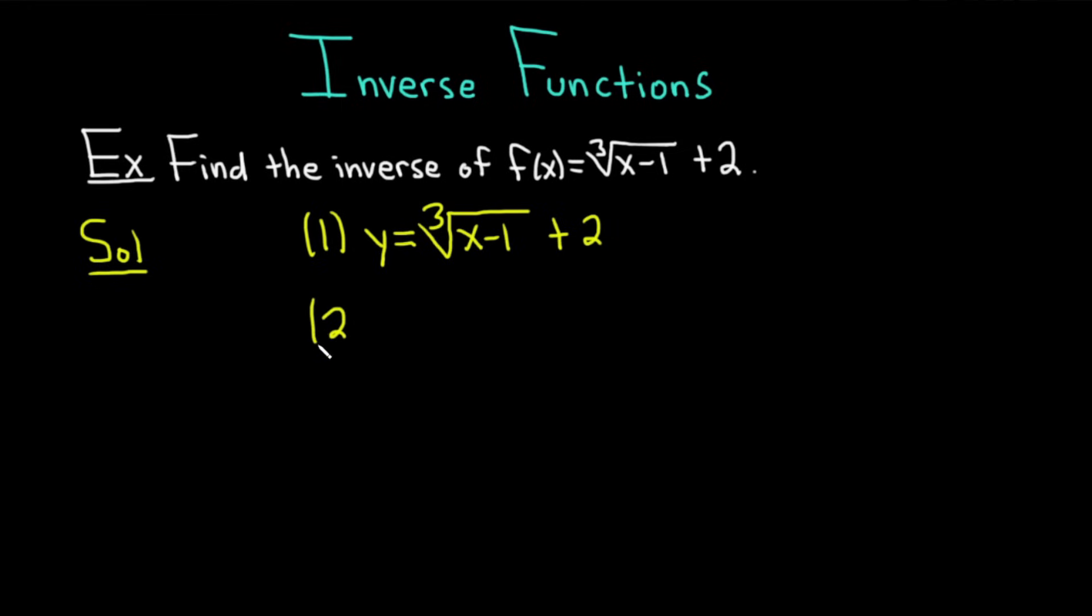Step two, you interchange your x and y, so you switch your x's and y's. So here we have a y, so you call it x, and then here you have an x, so you call it y. So here we get the cube root of y minus 1, and then we have a plus 2 over here. These first two steps are really easy in every problem because all you do is replace f of x with y in step one, and then in step two, you just switch your x's and y's.